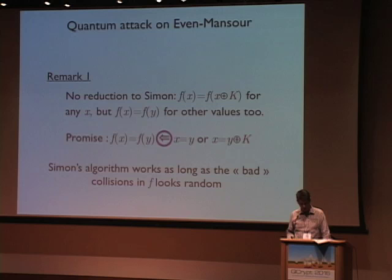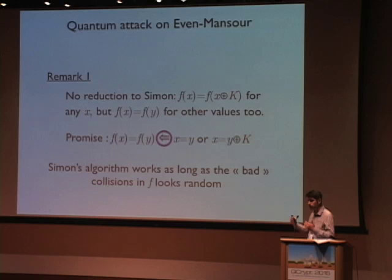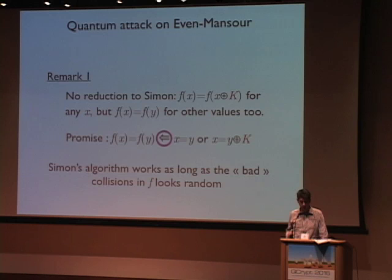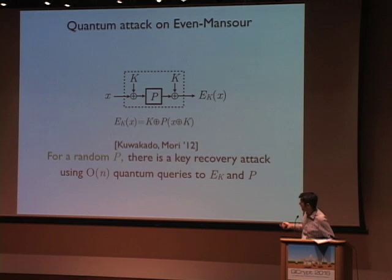However, there are two remarks. First, it's not exactly Simon's algorithm. P is a random permutation and EK looks like a random function, so you don't expect the if-and-only-if condition to hold — and actually it shouldn't. If you sum two random functions, they will have random collisions, not only for this period. So we just get the 'only if'. What we showed is that Simon's algorithm still works if the bad collisions — the ones that don't occur with period S — look random enough. If they look random, you just need to increase the number of queries by a constant factor.